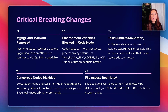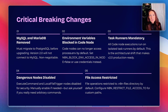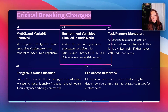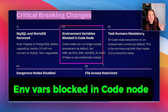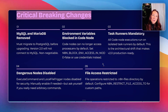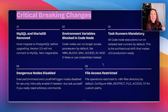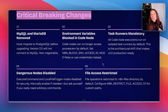Now let's dive into the critical breaking changes. First, MySQL and MariaDB are removed. If you're using MySQL or MariaDB as your n8n database, you must migrate to PostgreSQL before upgrading to V2. This is non-negotiable — V2 will not connect to MySQL. Second, environment variables are blocked in code nodes. For security, code nodes can no longer access process.env by default. If your workflow reads API keys from environment variables in code nodes, set N8N_BLOCK_ENV_ACCESS_IN_NODE in your environment configuration, or better yet, use credentials or secure methods instead.